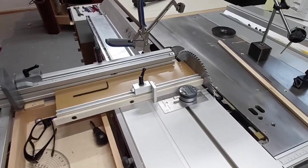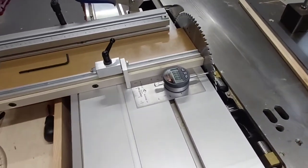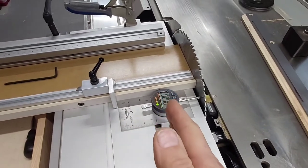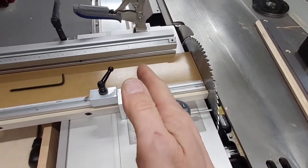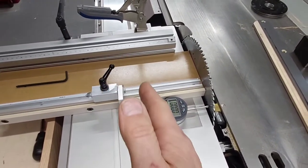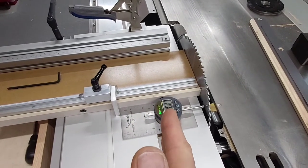I'm getting set up to measure the toe out on my Hammer K3 sliding saw. Toe out is the amount that the slider moves away from the blade as you push it forward.